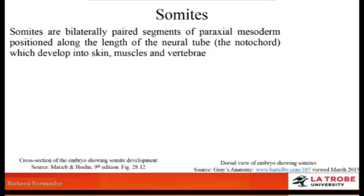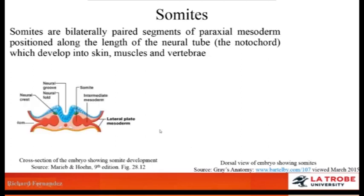When we consider somite development, we should realise that somites are bilaterally paired segments of para-axial mesoderm, positioned along the length of the neural tube or the notochord. In this diagram, you can see the mesoderm in red and the somites located just lateral to the neural tube. It is this somite that will develop into skin, muscles, and vertebrae.